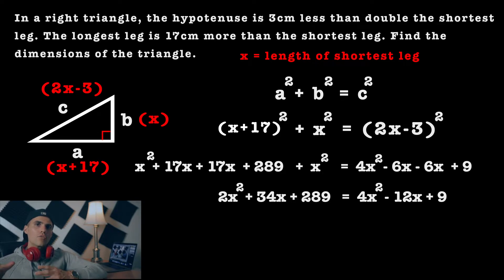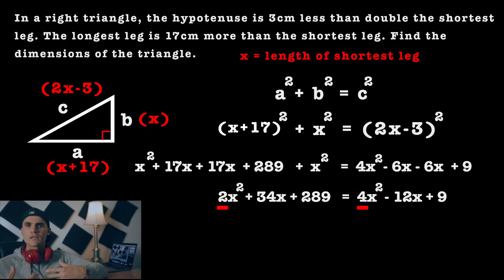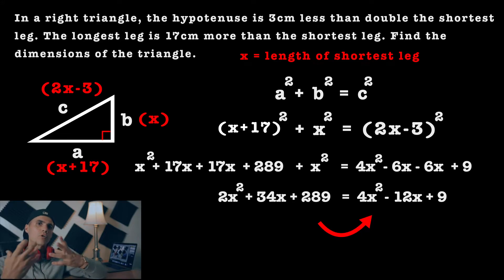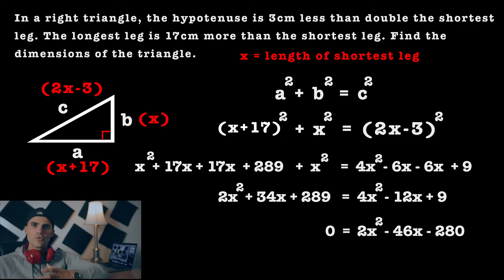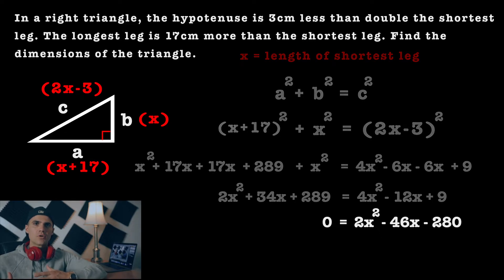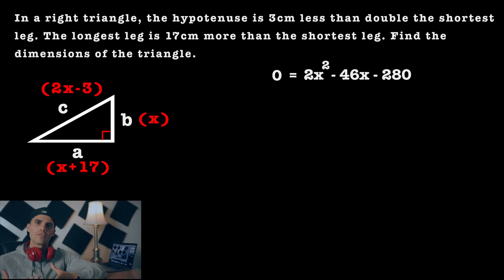Notice that on the right side the leading coefficient is 4, and on the left it's 2. I like to bring everything to the side where the leading coefficient will be positive — though either side gives the same solutions. Bringing the left-side terms over to the right gives zero equaling 2x squared minus 46x minus 280.